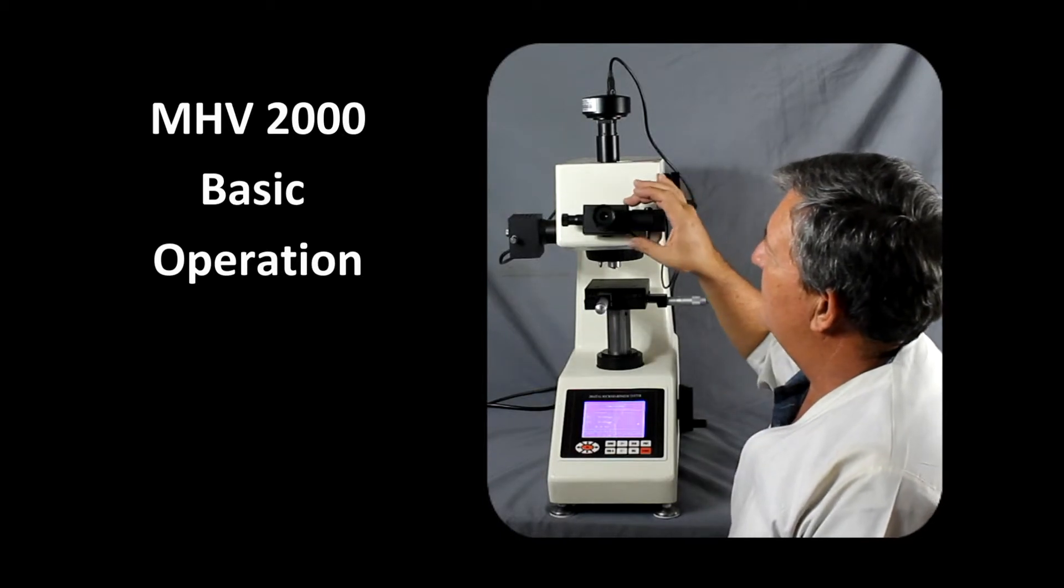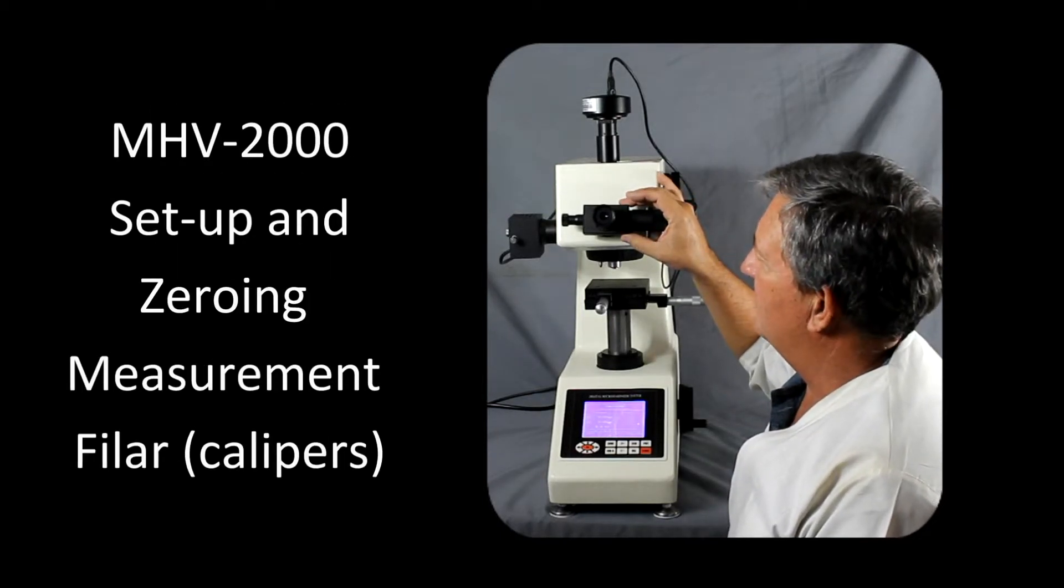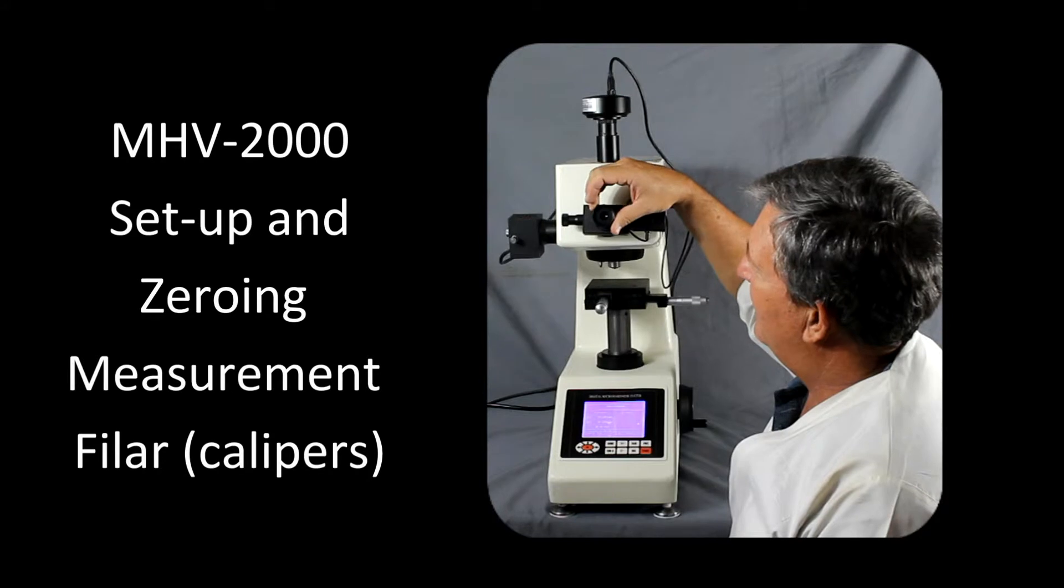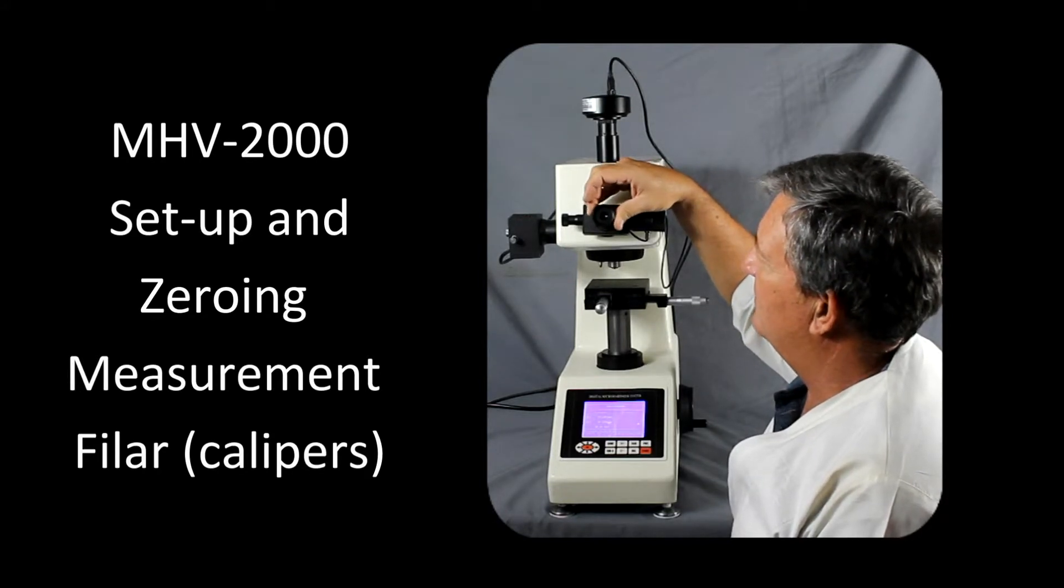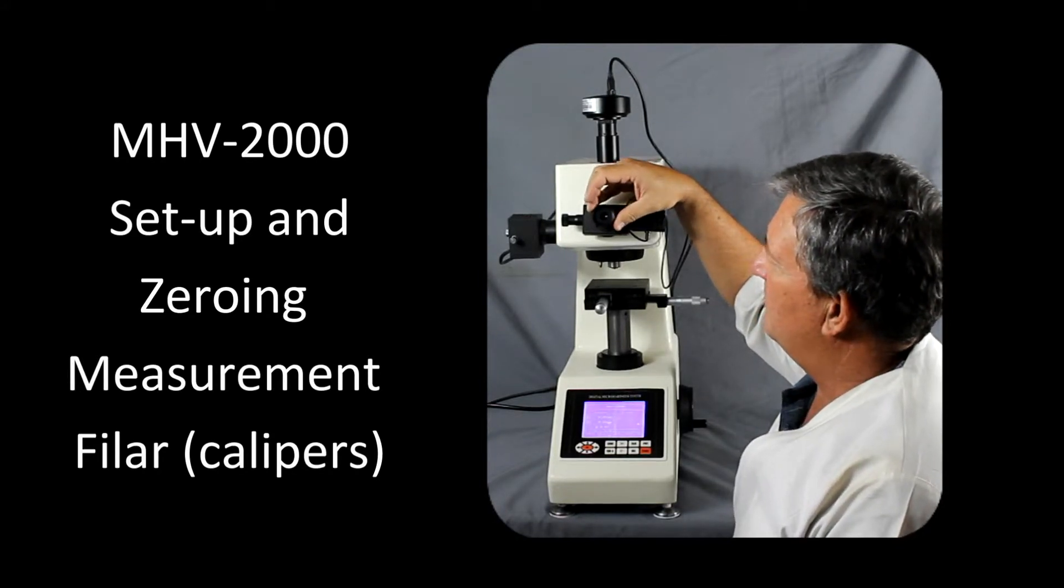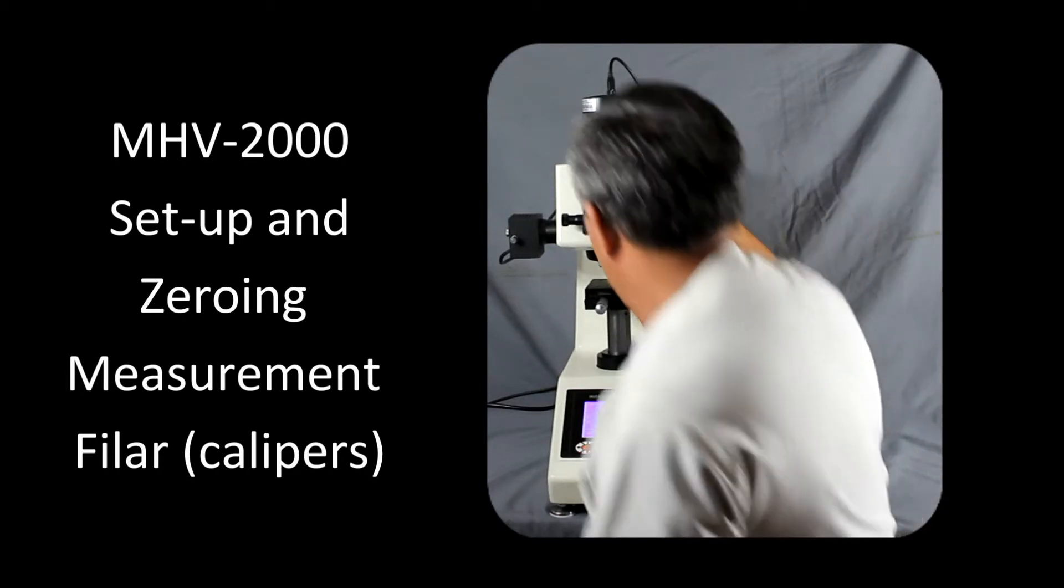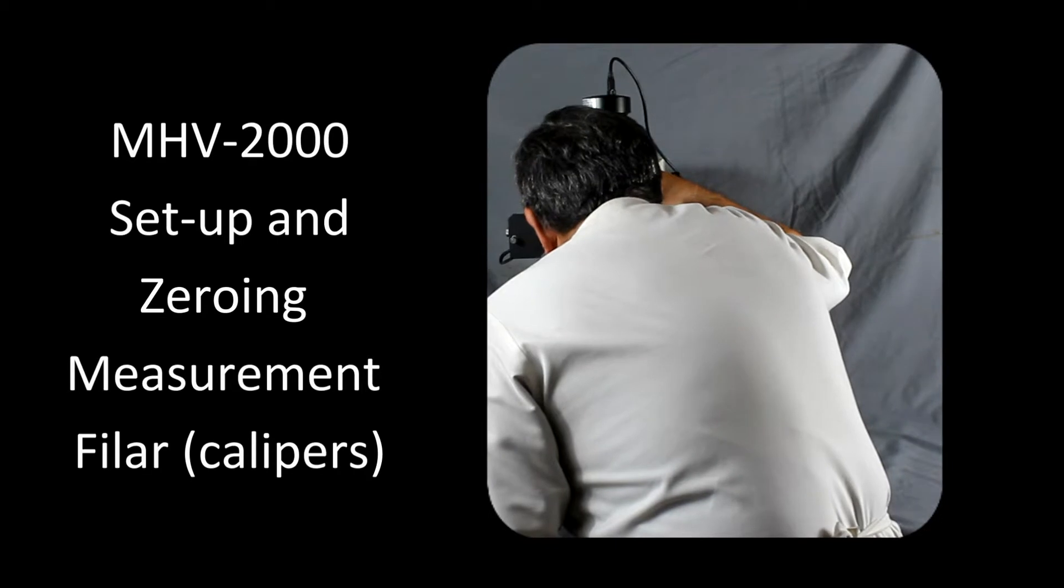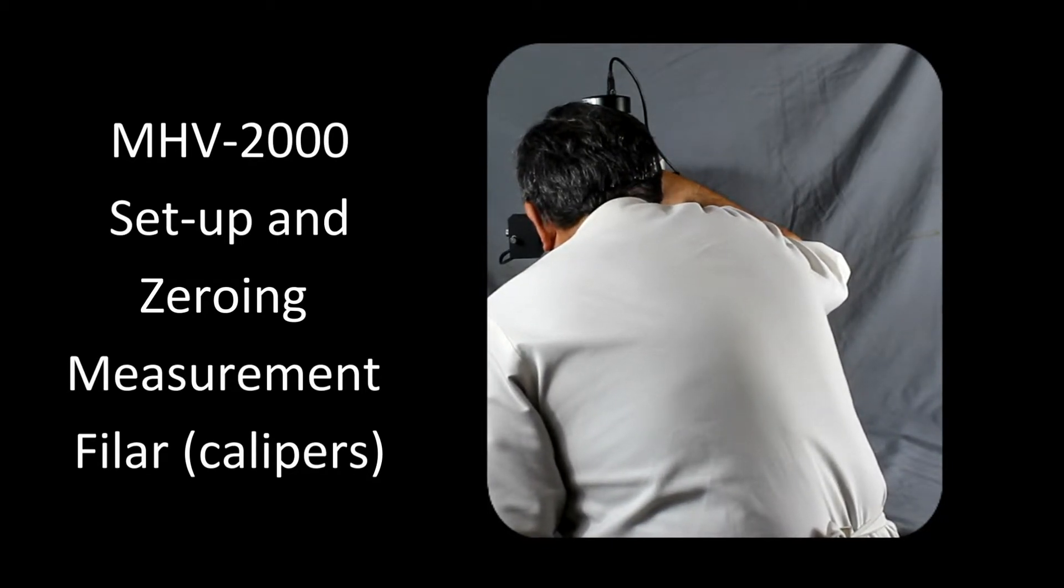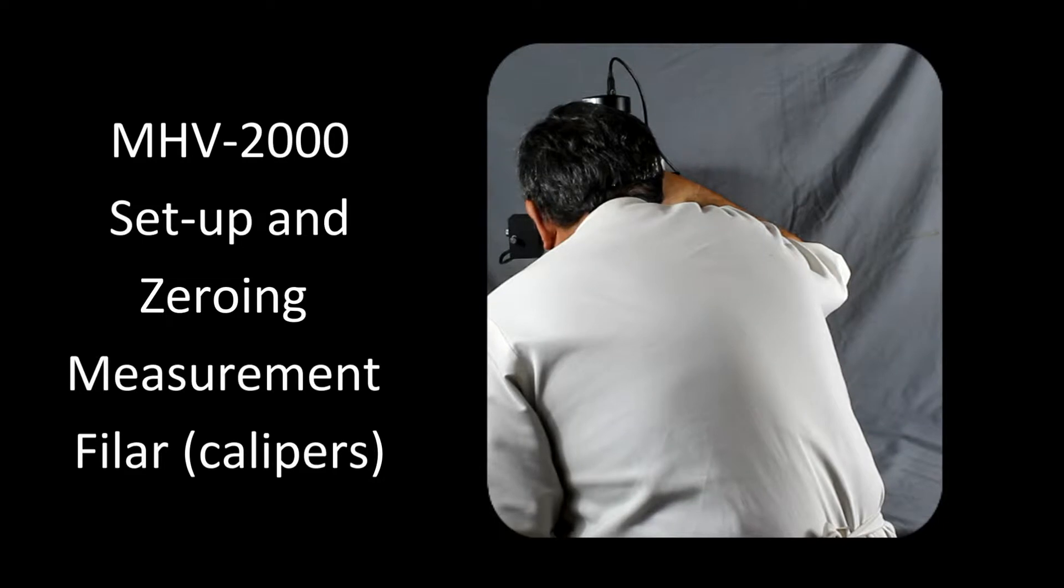The first step is to calibrate the filer system. The filer system has an eyepiece that is adjustable here to adjust the focus. What I recommend doing in order to increase the measurement accuracy is to focus that eyepiece and the lines inside so that they're in focus for your eyesight.